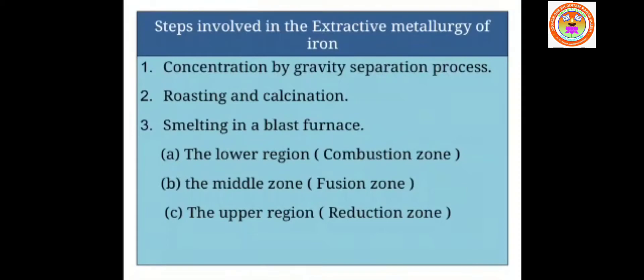When we do smelting in a blast furnace, we have three zones. The lower zone is called the combustion zone, where combustion and oxidation take place. The middle zone is called the fusion zone, where fusion takes place. The third is the upper region called the reduction zone, where reduction takes place.